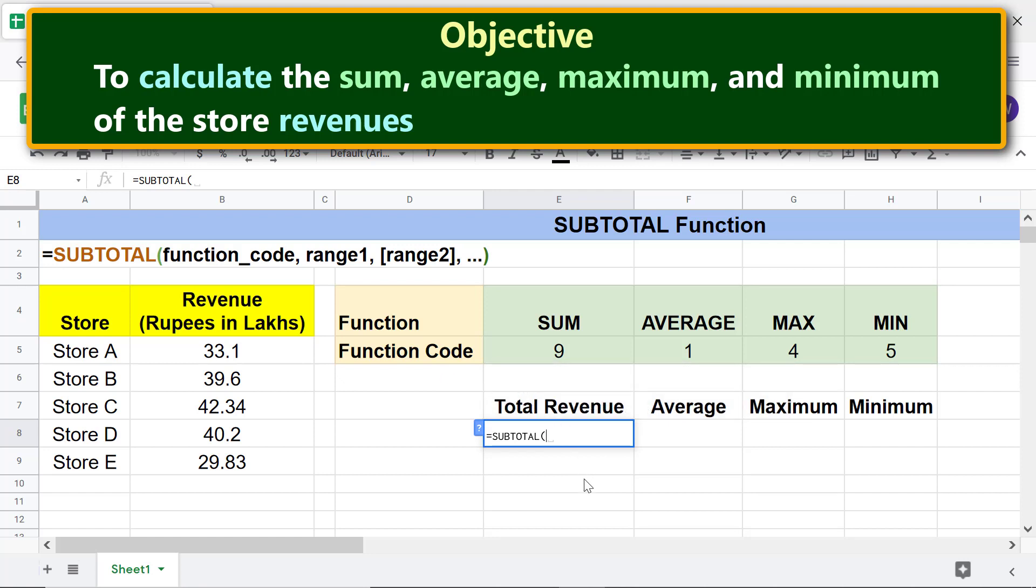For the Subtotal function code, click this cell. Type comma. For range 1, select this range.